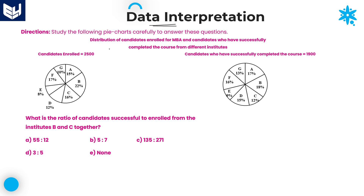The information is about distribution of candidates enrolled for MBA and candidates who have successfully completed their course from different institutions. Here there are two pie charts given. One is about how many candidates are enrolled, and the second pie chart is showing how many candidates successfully completed their course from various institutions A, B, C, D, E, F, and G — seven different institutions.